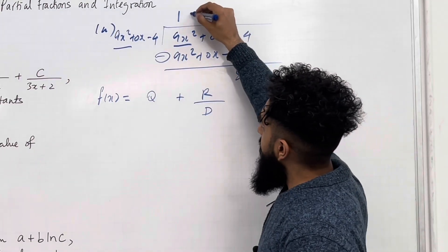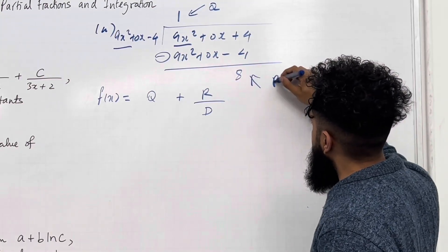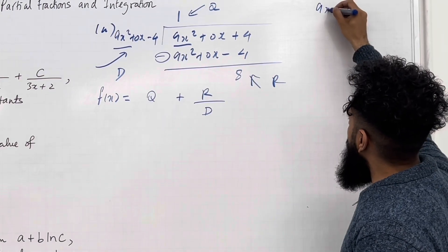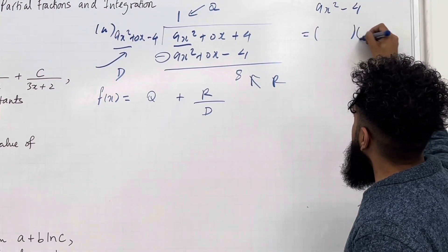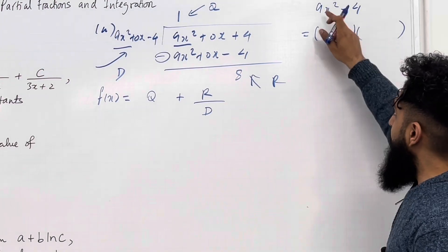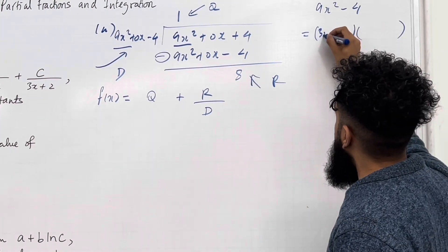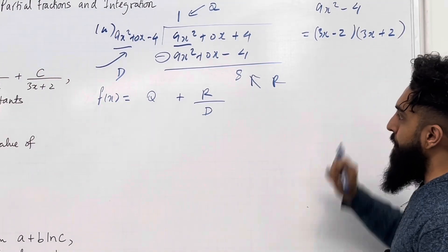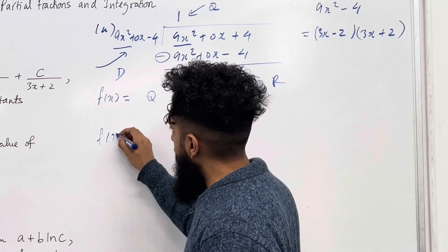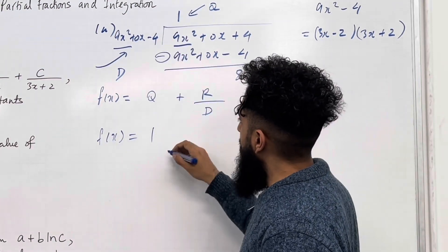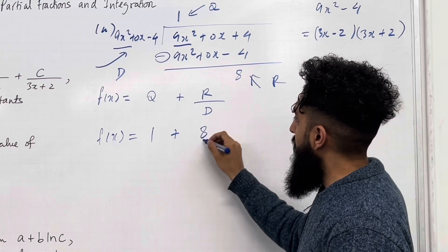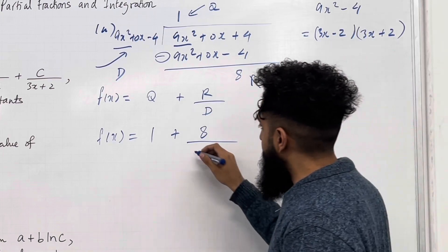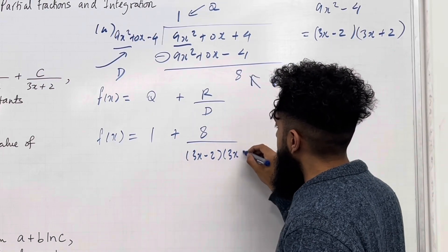The quotient is 1, the remainder is 8, and the divisor is 9x squared minus 4, which is technically a difference of two squares. So the factorisation is 3x minus 2 times 3x plus 2. So f of x equals 1 plus 8 over 9x squared minus 4, which in factorised form is 1 plus 8 over (3x minus 2)(3x plus 2).